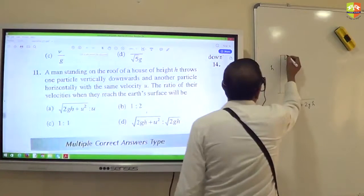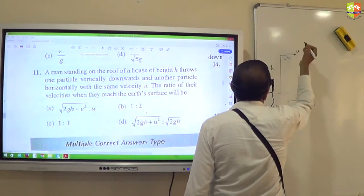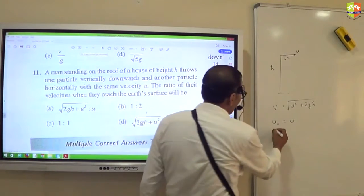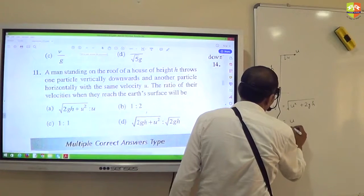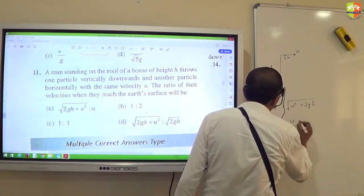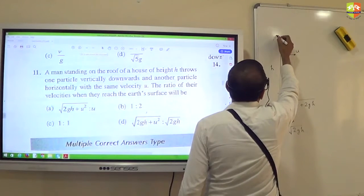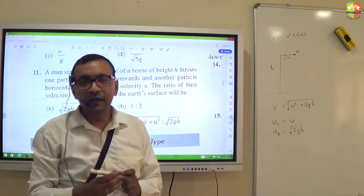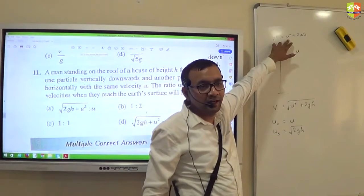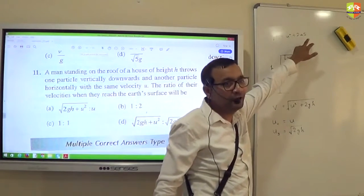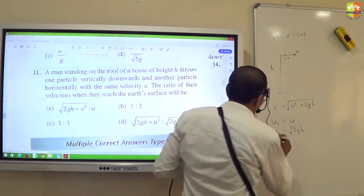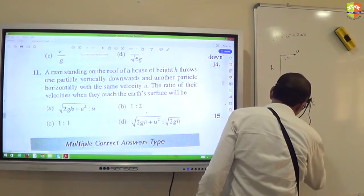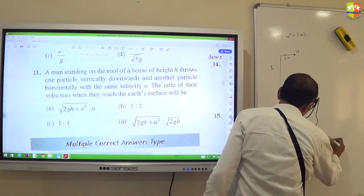And suppose you are throwing it like this with velocity u. Its horizontal velocity will be u only. And its vertical velocity will be what? Under root of 2gh. It is vertical velocity. You can find out by v square equal to u square plus 2as along vertical direction. If you do, initial velocity along vertical direction is 0. In the second case, v square equal to 2g into h. So v is root 2gh. So final velocity finally will be under root of ux square plus uy square, which is u square plus 2gh.